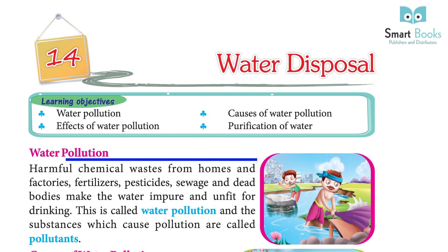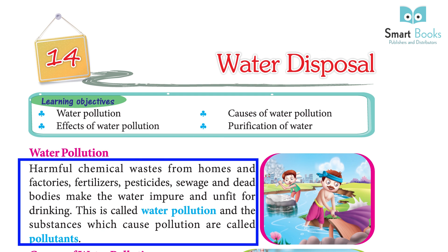Water Pollution: Harmful chemicals and waste from homes, factories, fertilizers, pesticides, sewage and dead bodies make the water impure and unfit for drinking. This is called water pollution.